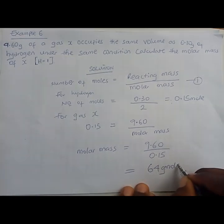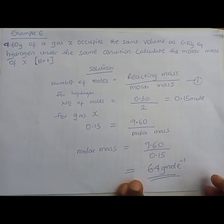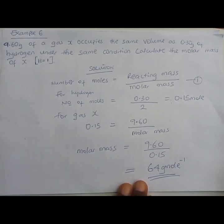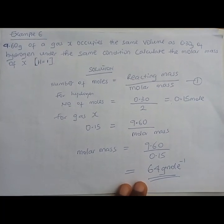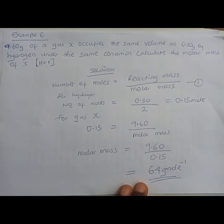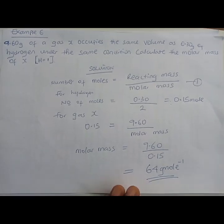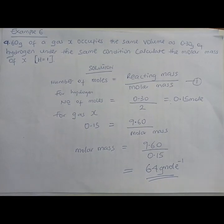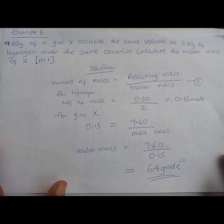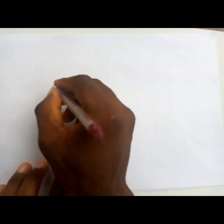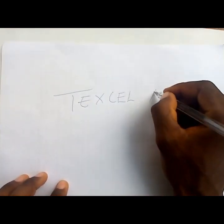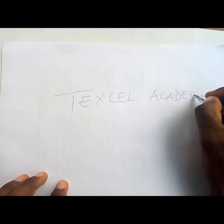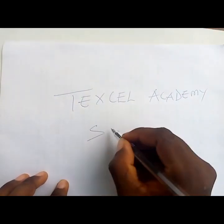We obtain 64 grams per mole as the molar mass of gas X. We've now solved six questions today. From the principles discussed and through all these examples, you should have gained better knowledge on how to solve calculations in chemistry. This was brought to you by Textile Academy — subscribe to get more.